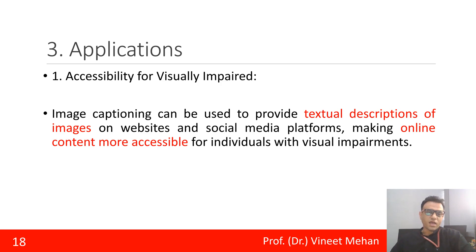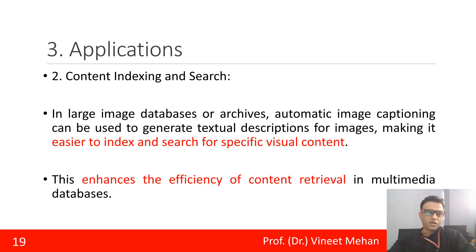The applications of automatic image captioning include: first, accessibility for visually impaired people — an image is converted to text, and then text to speech, helping visually impaired individuals understand images. Second, content indexing and search — photographs are automatically captioned to generate an index, enabling fast and efficient searching.